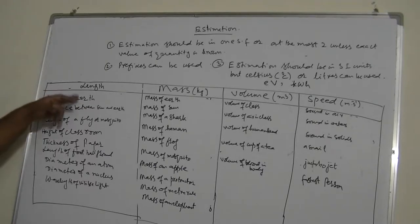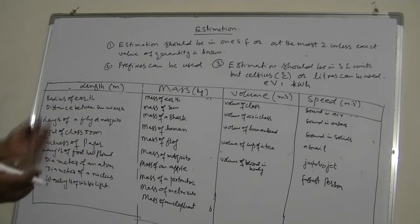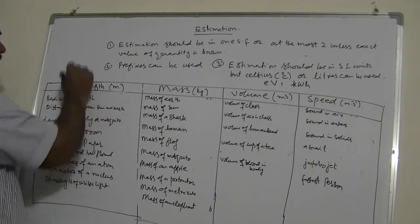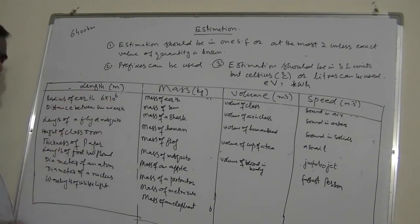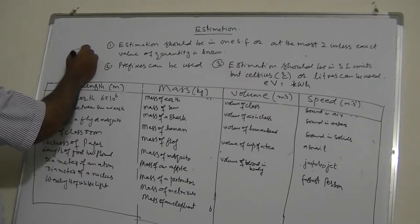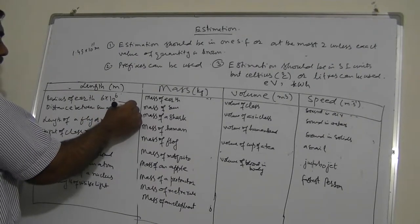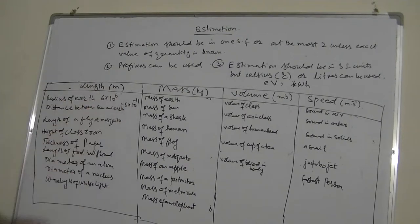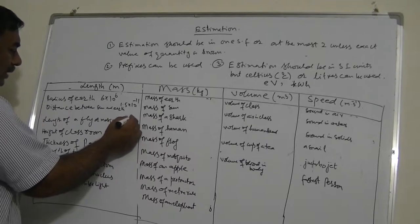I will give values in meters, but you can use kilometers if you prefer. The radius of Earth is 6,400 kilometers, or approximately 6 × 10⁶ meters. The distance between the Sun and Earth is exactly 1.49 × 10¹¹ meters, but I can quote it as 1.5 × 10¹¹ meters. The length of a fly or mosquito can be about 1 to 2 millimeters, so approximately 2 × 10⁻³ meters.